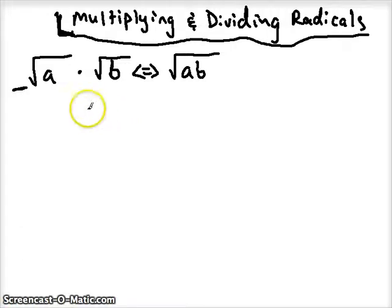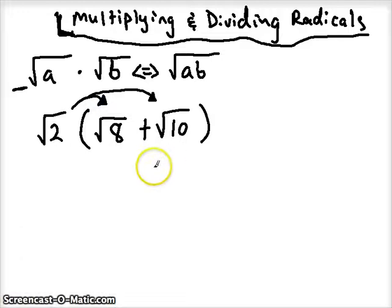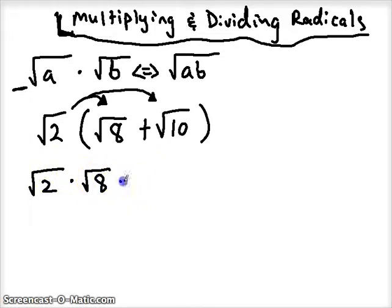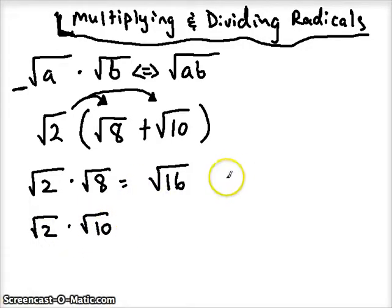Let's do an example. If I have the square root of 2 and I want to multiply it by a binomial — two terms — it works just the same as usual. We distribute things outside the parentheses and multiply everything inside. So we do the square root of 2 times the square root of 8. That's our first multiplication. Because they have the same index, I can move them under one radical and get the square root of 16. Then for the other distribution, multiplying them together would not give me a perfect square, so I'm going to keep them factored.